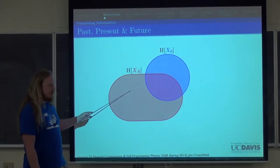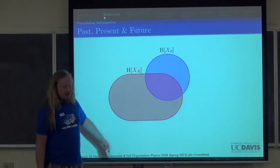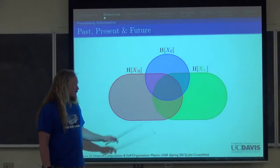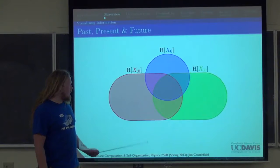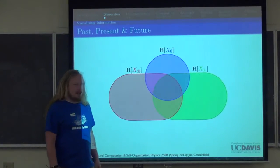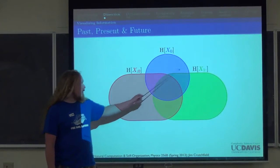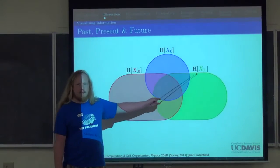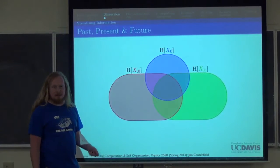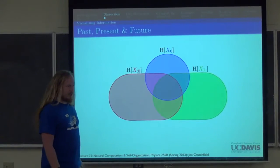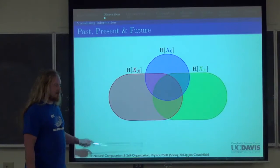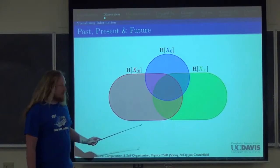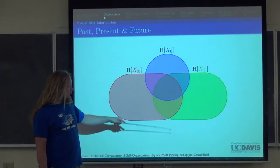We can throw the past on this diagram. There's some information that the past and present share — the mutual information — some information only in the past, and some only in the present. We can also add the future. The only difference is I've elongated the past and future ovals as a visual aid to remember these are infinite random variables in general.